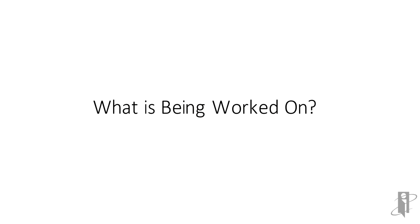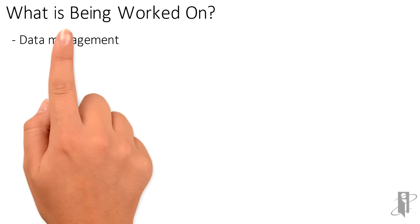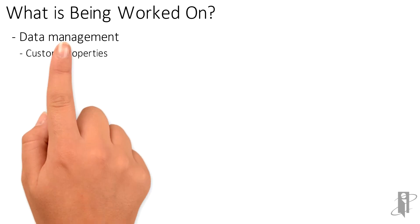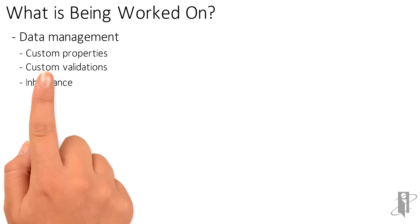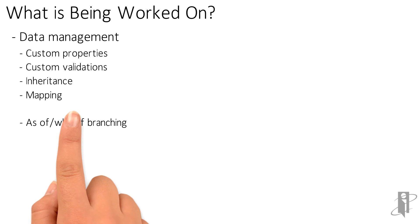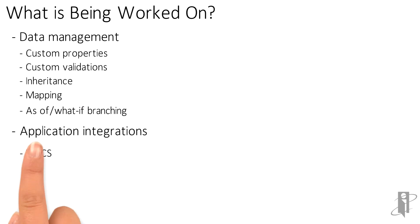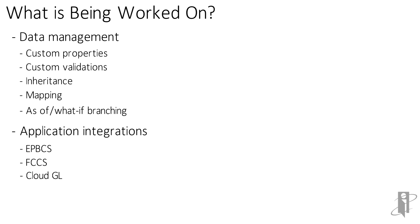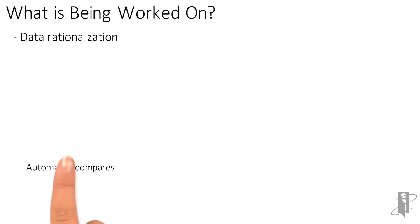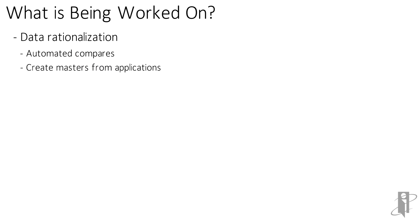Currently, here is a list of items that are being worked on. Under data management: custom properties, validations, inheritance mapping, and branching logic. Applications being worked on are EPBCS, FCCS, and Cloud General Ledger, along with the addition of data validations during an import. More items include automated data comparisons, some change management, and the ability to create master data from an application.